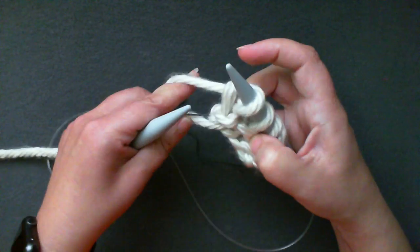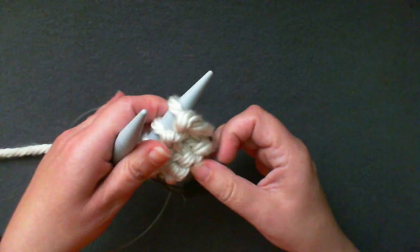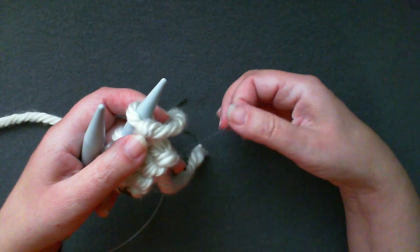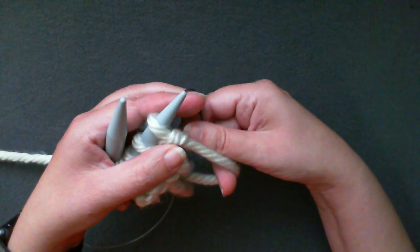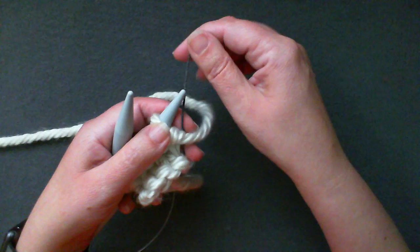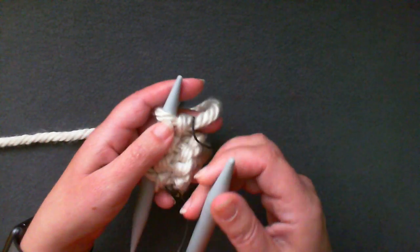If you forget to move the yarn before turning, just take your waste yarn up from behind the working yarn and bring it over after you've turned and just keep going.